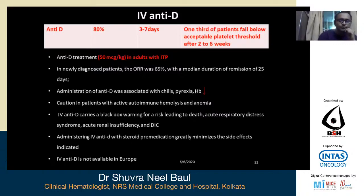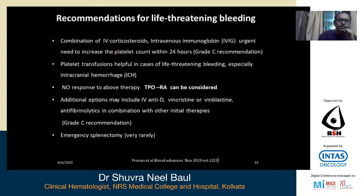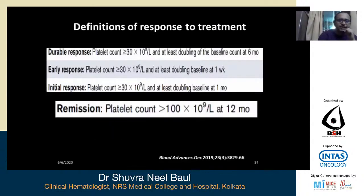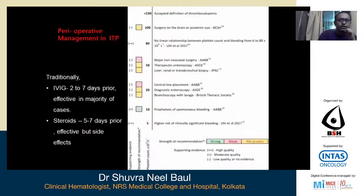For life-threatening bleed, we use combinations of IV corticosteroids, IVIG, and sometimes platelet transfusions to mitigate the risk. If there is no response, we can add TPO receptor agonists, and there are some studies with IV vincristine, vinblastine, and tranexamic acid; very rarely, emergency splenectomy. The definition of response: durable response is platelet count more than 30,000 and at least doubling of baseline at six months. Early response is platelet count more than 30,000 and at least doubling of baseline at one week. Initial response is platelet count more than 30,000 at one month. Remission is platelet count more than 100,000 at 12 months.